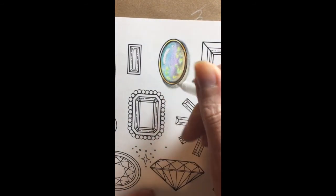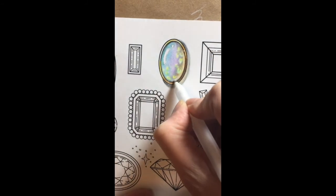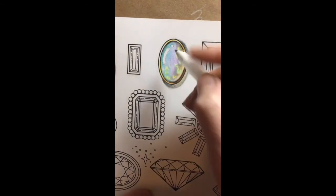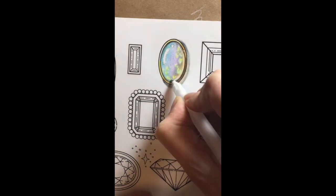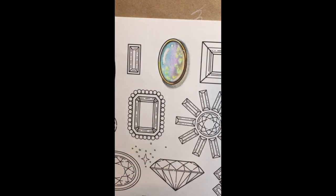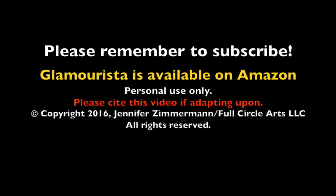Before I call this complete I'm going to take my temperamental gel pen and add a couple more simple highlights just sort of reflecting off the bottom. And I think that that will make this look really finished. I hope that you've enjoyed this tutorial. Don't forget subscribe to my channel and if you've enjoyed coloring these gems you might love Glamourista. It's available on Amazon.